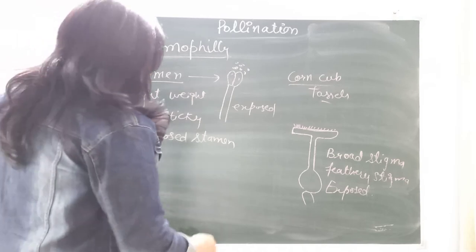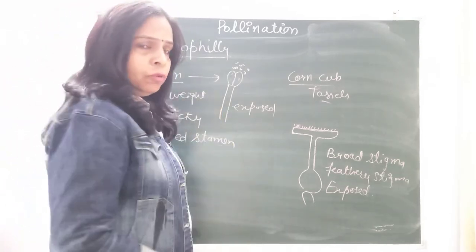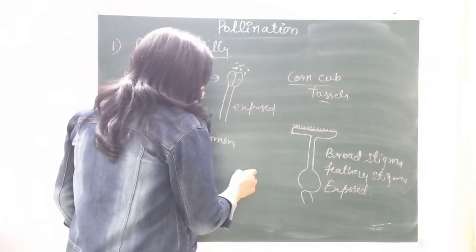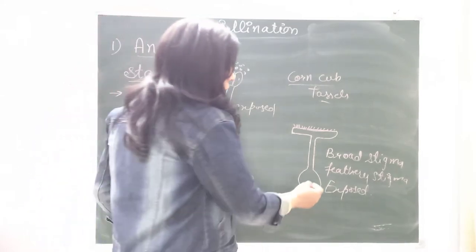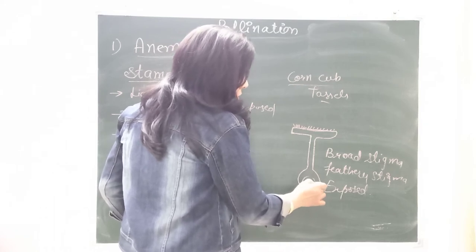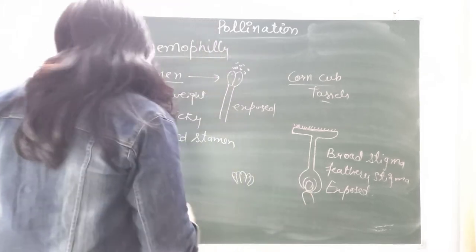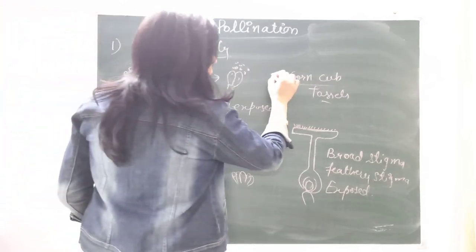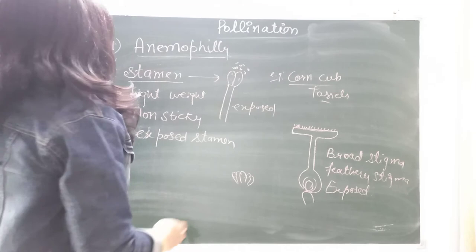One more characteristic: in plants showing anemophily, the flower size is small. These small flowers can form inflorescences, and in every ovary there is typically one ovule in the locule. The corn cob is an example of such an inflorescence.